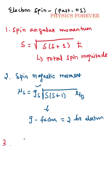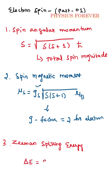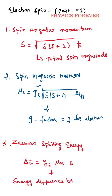Third, Zeeman splitting. The splitting energy ΔE equals gs times the Bohr magneton times B. This is the energy difference between spin states, which is most important.